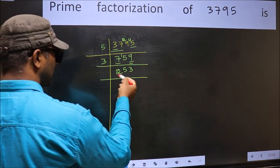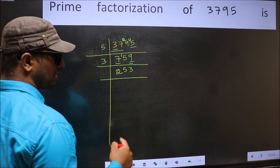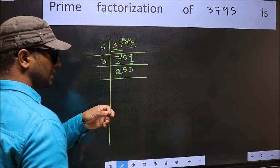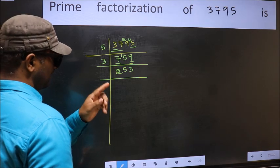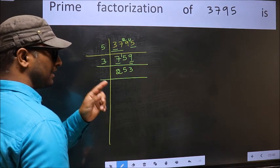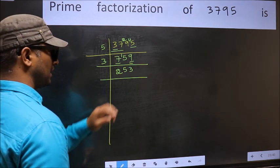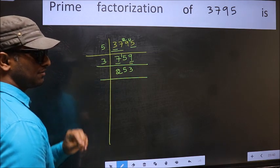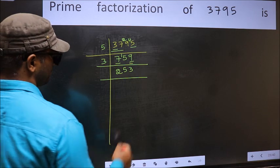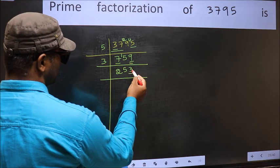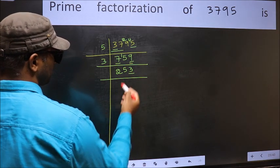Now to check whether it is divisible by 3 or not, add the digits. 2 plus 5 plus 3 equal to 10 and 10 is not divisible by 3. So this number also not divisible by 3. Next prime number 5. Last digit is neither 0 nor 5. So this is not divisible by 5.